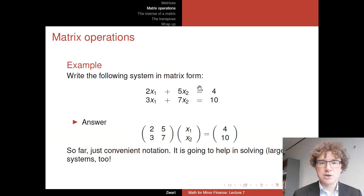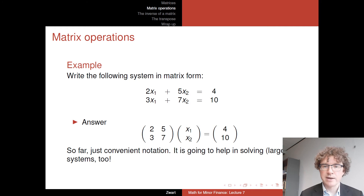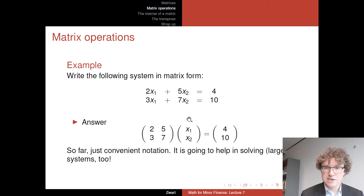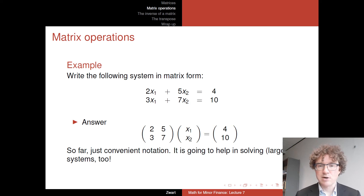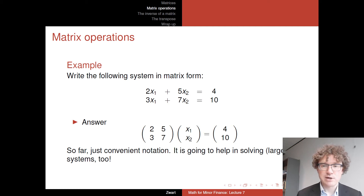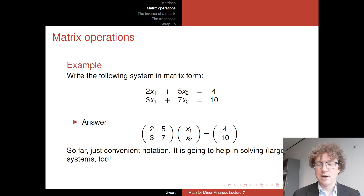So we have just rewritten the same system of equations as A times x equals b, where b is the column vector [4, 10]. This is a convenient shorthand notation, and the reason we do this is that it will actually help us solve these systems of equations — especially large ones — in a convenient fashion.